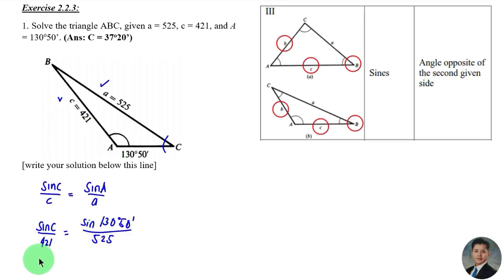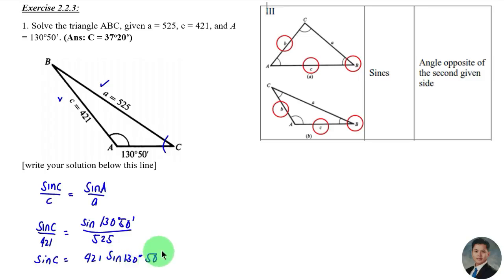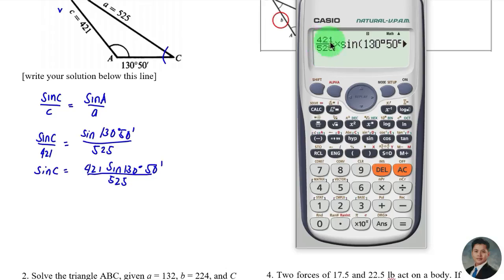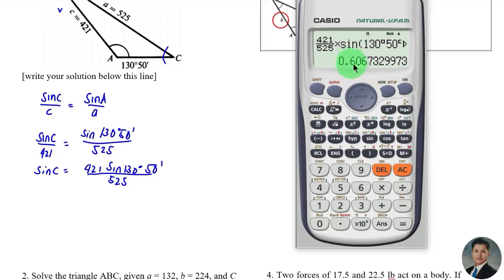Solving for sin C: sin C = 421 × sin(130 degrees 50 minutes) / 525. That is equal to 0.6067.